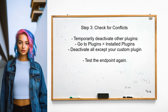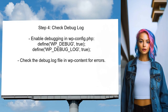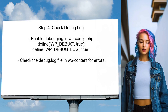The user should also verify that there are no conflicts with other plugins or themes that might be preventing the REST API init event from firing. This can be done by temporarily deactivating other plugins. Finally, the user can check the WordPress debug log for any errors that might indicate why the REST API init event is not firing, which can provide valuable insights into the issue.